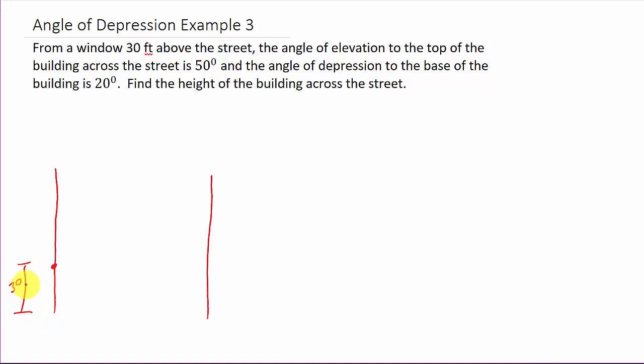They are telling us the angle of elevation to the top of the building and the angle of depression to the base of the building. So we've got an angle to the top, and an angle to the bottom of the building.